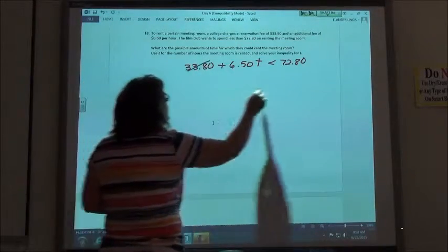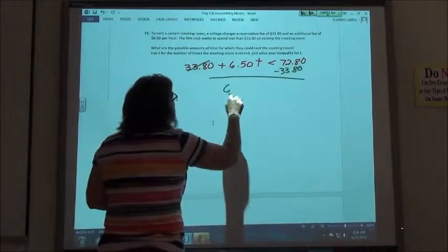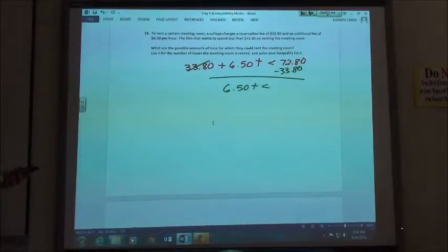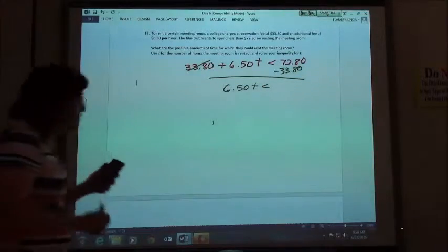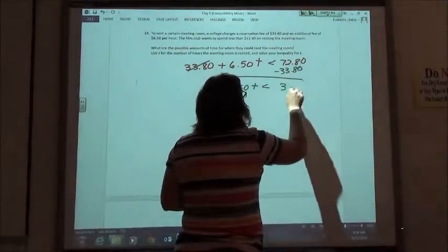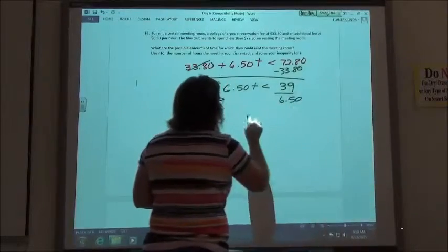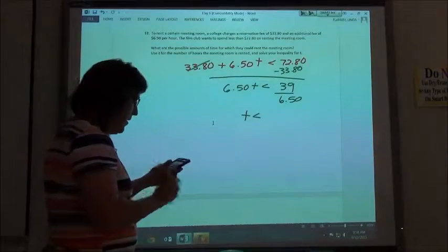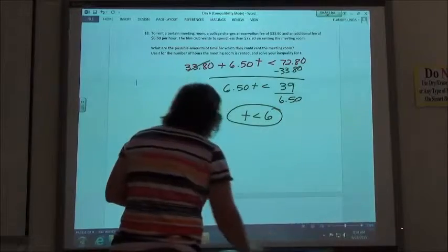First thing we're going to do is subtract $33.80. So $6.50T is less than $72.80 minus $33.80, which is $39. We're going to divide by $6.50, and so our answer is T is less than 6.